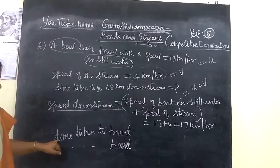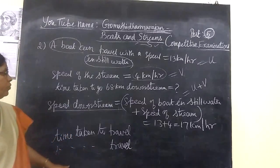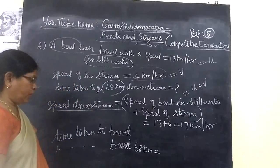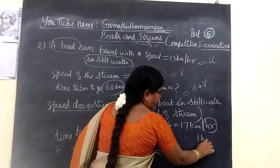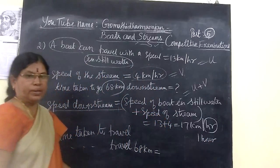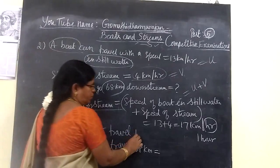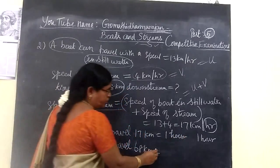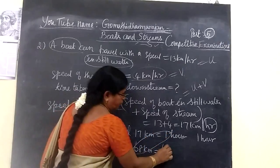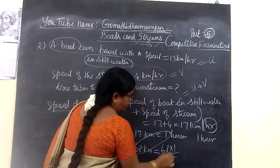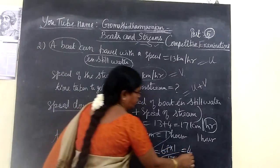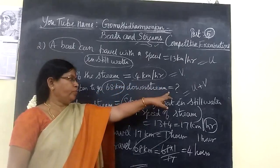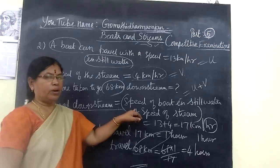We are going to find time required to travel 68 km downstream. In 1 hour, it reaches 17 km. Time taken to travel 17 km equals 1 hour. Therefore, time taken to travel 68 km is 68 into 1 by 17. If we cancel, we get 4. So this is 4 hours. This is a very simple problem. Thank you.